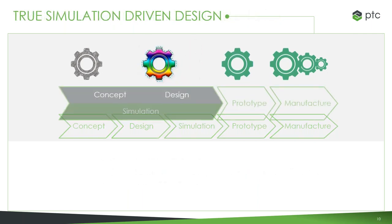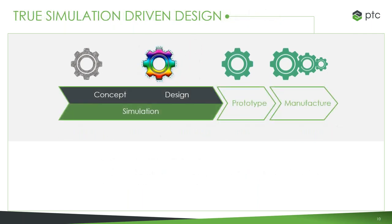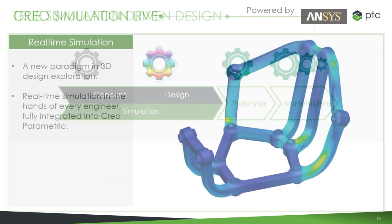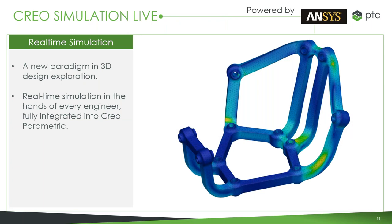With Creo 6.0, we're introducing a brand new approach where simulation is no longer seen as a separate step in the process. Every engineer, throughout each step of the design process, can start to make use of simulation capabilities. This is fast, easy, and made possible through products such as Creo Simulation Live. We've partnered with ANSYS and used their discovery engine directly in Creo to do simulation right on top of the model — getting instantaneous analysis results as soon as we make a change, directed at every engineer, not just the expert analyst.